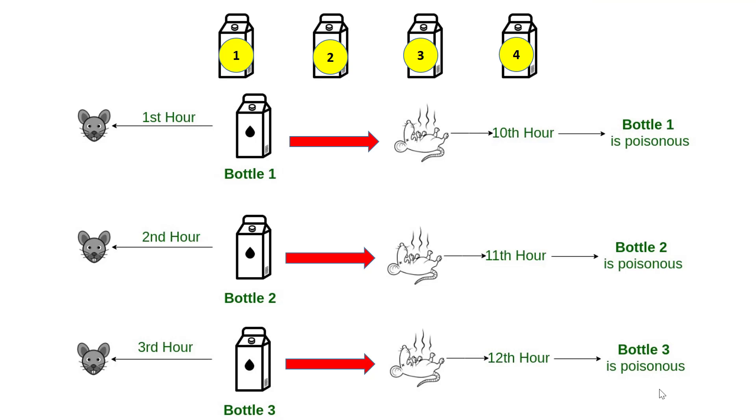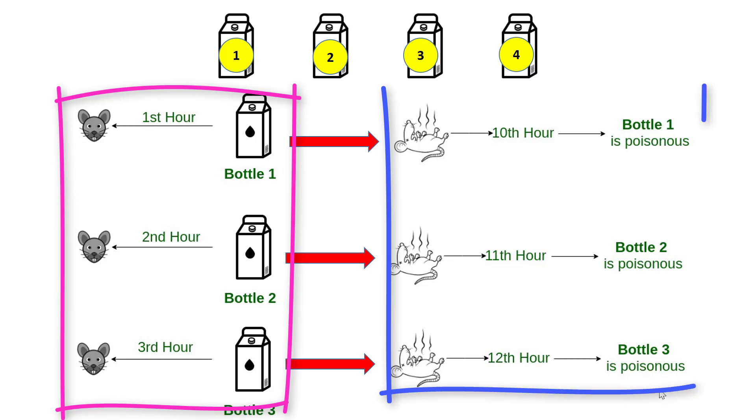So, let me repeat the logic. You don't even need 24 hours to find out which bottle is poisonous. The logic is: feed the milk sample to the rat after each hour and note down the time. If the rat dies after 10 hours, then the first one is poisonous. If the rat dies after 11 hours, then the second one is poisonous. If the rat dies after 12 hours, then the third one is poisonous. And if the rat does not die even after 12 hours, definitely the fourth one is poisonous. And you don't have to wait till 13th hour to find out whether it's true or not.